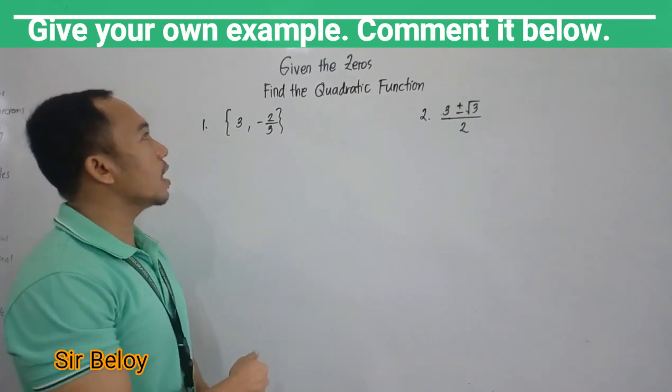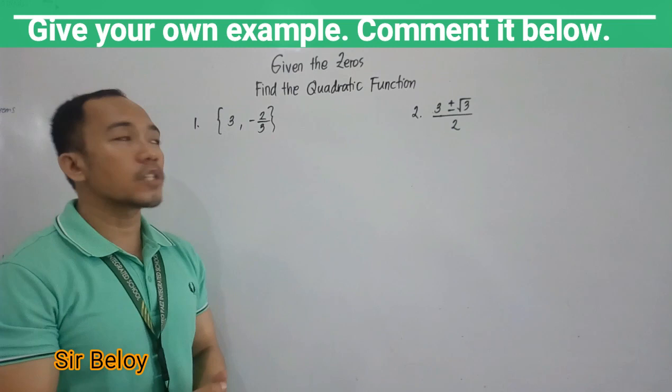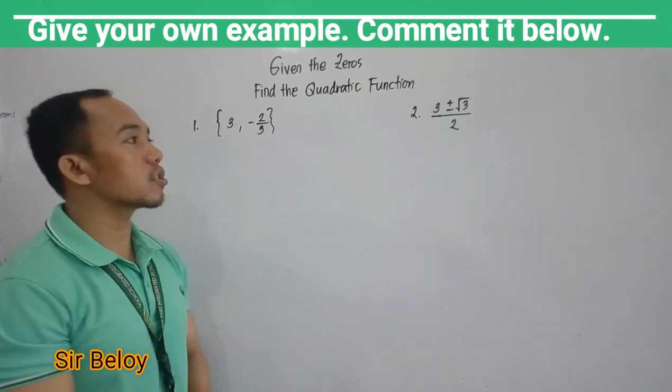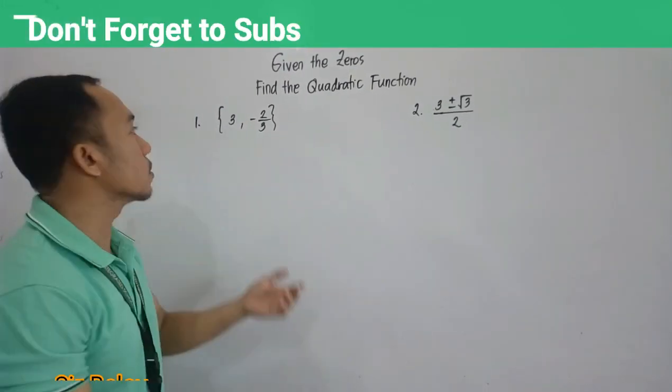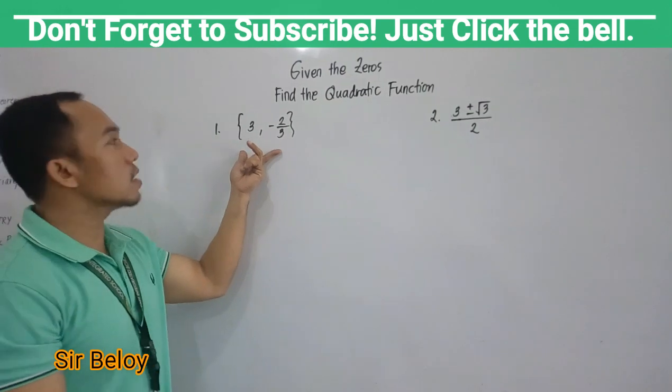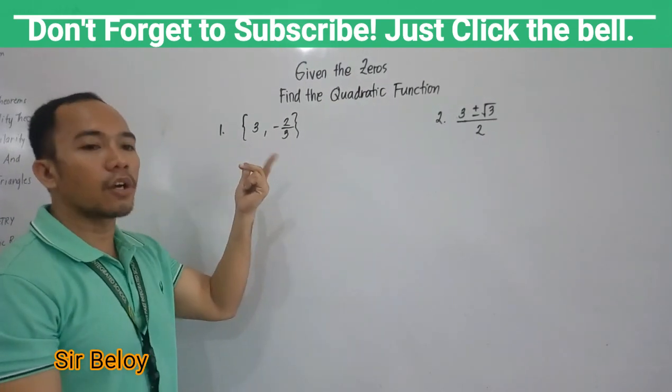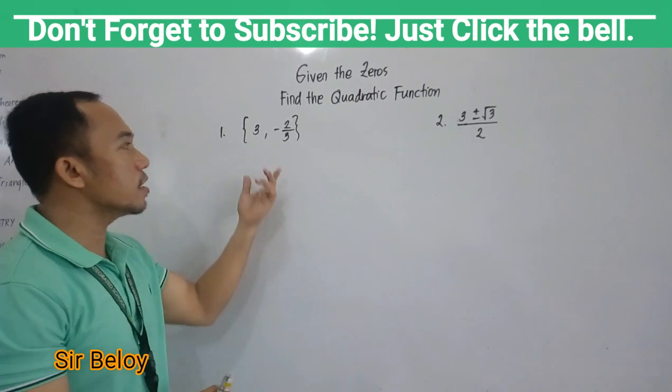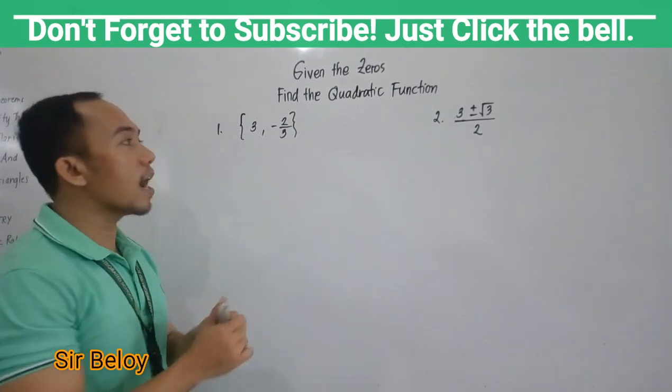Friends, I will be discussing today, given the zeros, we will find the quadratic function. So I have here two examples. If the given zeros are whole numbers and fractions, we will use this method. First,